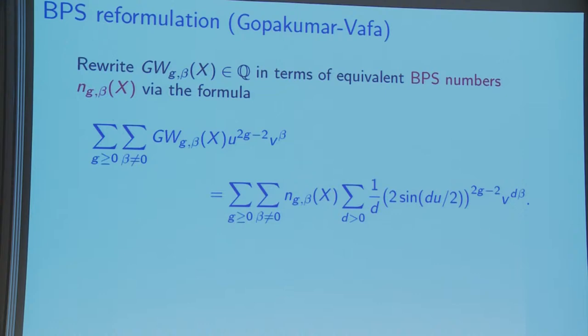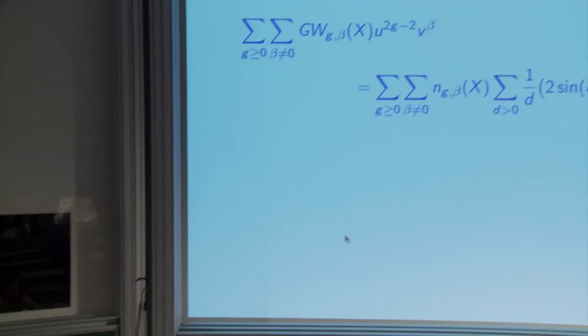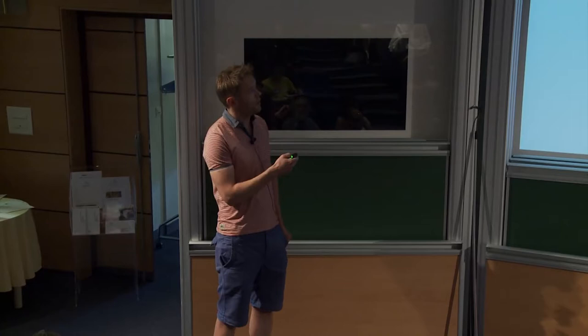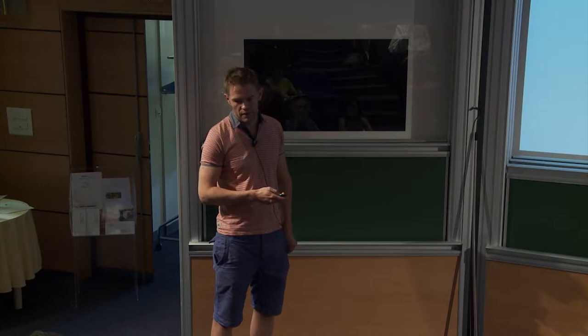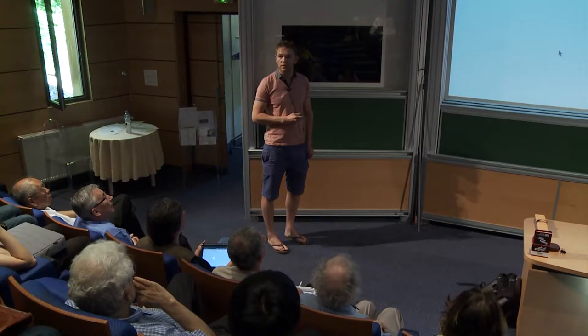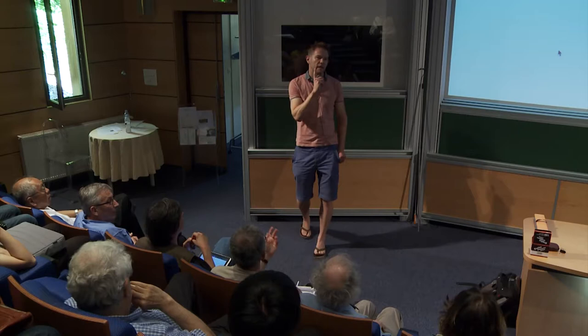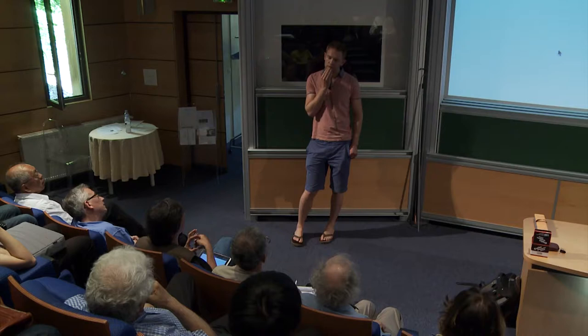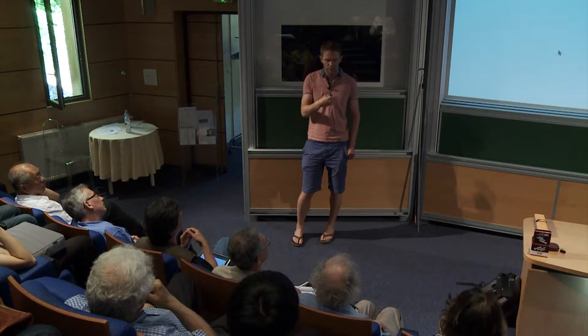Conjecturally one can also do this with appropriate insertions and get integer BPS numbers; Rahul Pandharipande's ICM talk conjectures this holds generally. The physics derivation of Gopakumar-Vafa only applies to Calabi-Yau threefolds, and Rahul has an extension for arbitrary threefolds with versions for surfaces. In higher dimensions there should be some integer structure but it's not entirely clear what it should be. There's another source of integer structure from K-theoretic invariants.